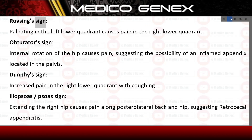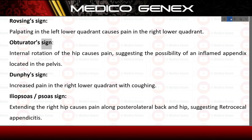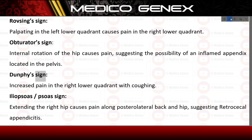Signs specific for appendicitis. Rovsing's sign — palpating in the left lower quadrant causes pain in the right lower quadrant. Obturator's sign — internal rotation of the hip causes pain, suggesting the possibility of an inflamed appendix located in the pelvis. Dunphy's sign — increased pain in the right lower quadrant with coughing.